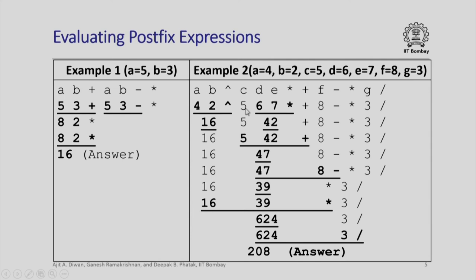Then you have 5, 6, 7 star, 6, 7 star will be evaluated next, you will get 42. The entire expression now reduces to this part. Notice that in this part 5, 42 plus is the valid combination of operators and operand, so this will be resulting in 47.